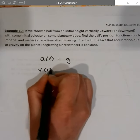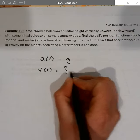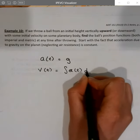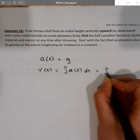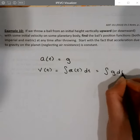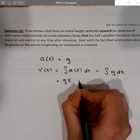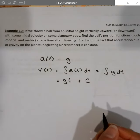I know that the velocity function is going to be the integral of the acceleration function, and hence the integral of g dt. But g is just a constant so it's going to integrate to gt plus c.